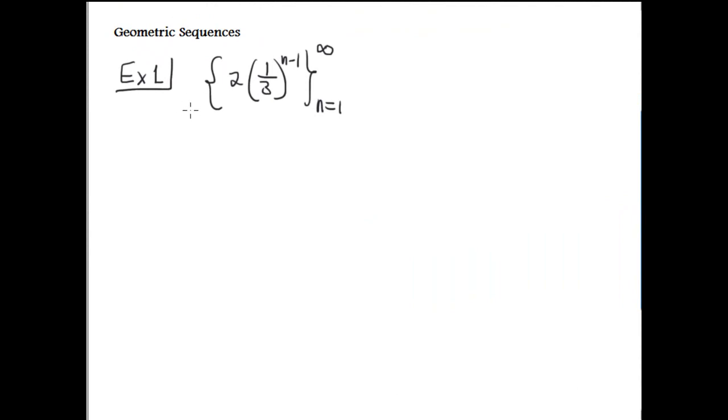For example, if you expand this series, n equals 1 is 2, n equals 2 is 2 over 3, 2 over 9, 2 over 27, 2 over 81. We can simplify it. It's obvious the common ratio is 1 third. The A1 is 2, but the common ratio is 1 third, which is less than 1. Therefore, the common ratio is less than 1.